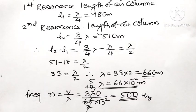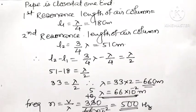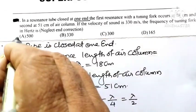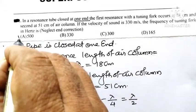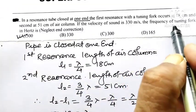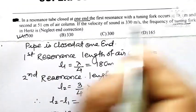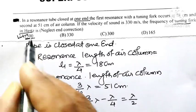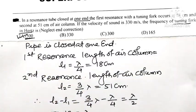Out of the 4 options, option A, that is 500 hertz, is the correct option. That is the frequency of the tuning fork in hertz — it is 500 hertz, and A is the correct option for this question.